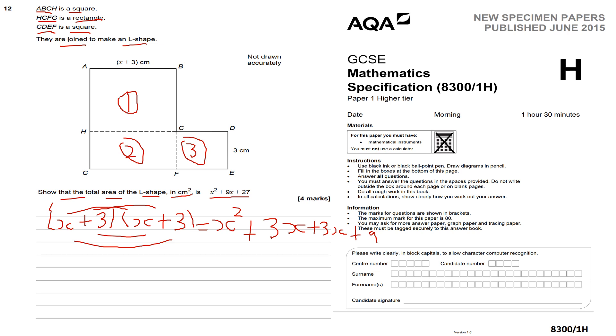The area of the square CDFE will be 3 by 3, which is 9. The area of the rectangle - well, the length is x+3 and the height will be 3, so we're going to have three lots of (x+3). We do 3 times x and 3 times 3. Three times x will be 3x, and 3 times 3 will be 9.